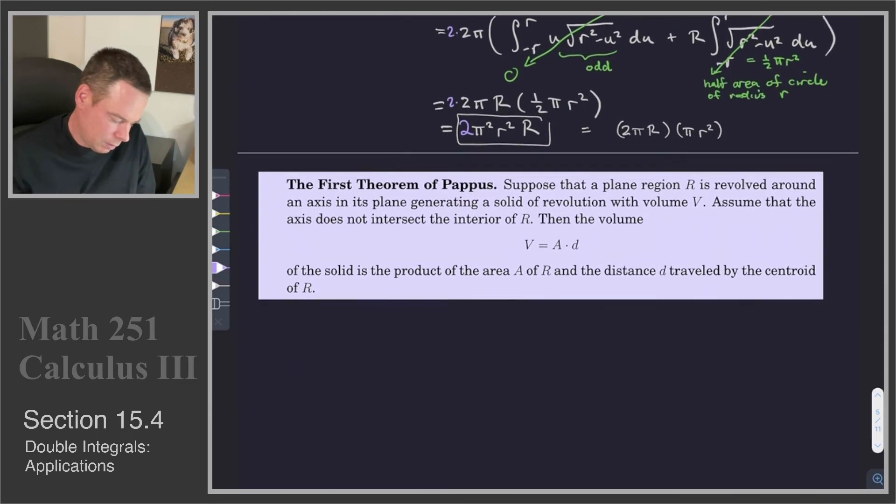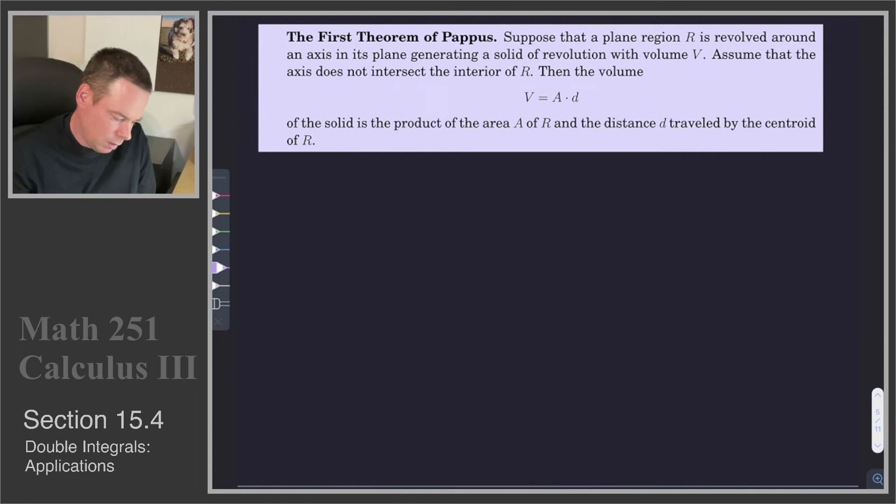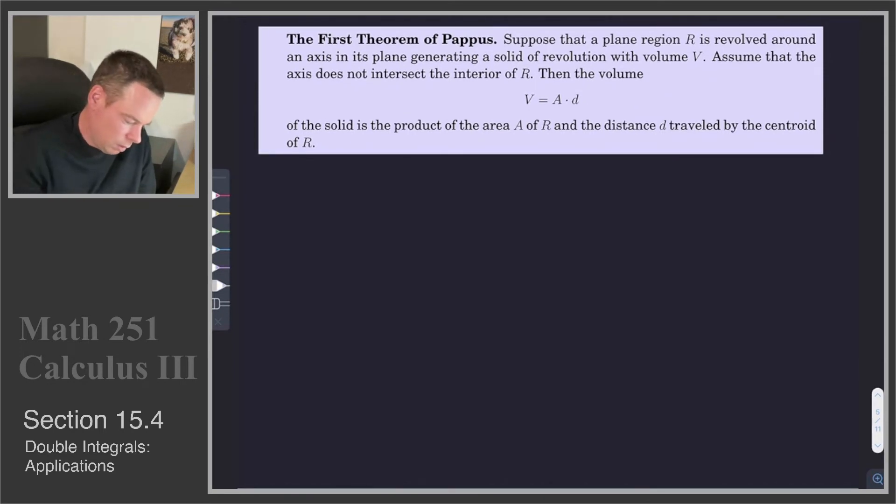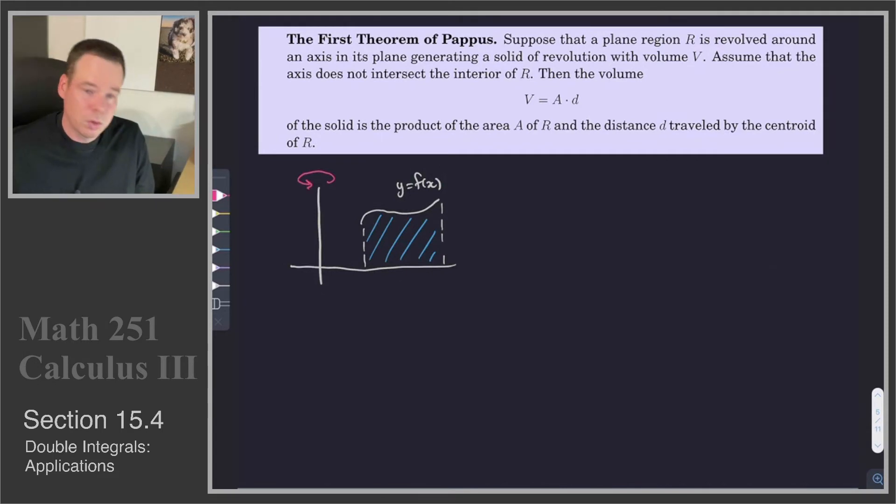This is known as the First Theorem of Pappus. The First Theorem of Pappus says suppose you have a plane region. There's our plane region, trapped between some curve y = f(x). And we rotate it around some axis of rotation to create our solid of revolution. How do we get the volume? The theorem of Pappus says that the volume of that resulting solid is given by A times D, where A is the area of the region we're revolving—that's the area of that blue shaded region.